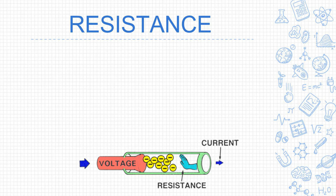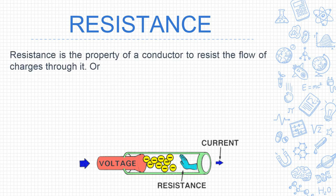Next is resistance. In Ohm's law, V is equal to IR, where V is potential difference, I is current, and R is the constant we call resistance. What is resistance? Resistance is the property of a conductor to resist the flow of charges through it.